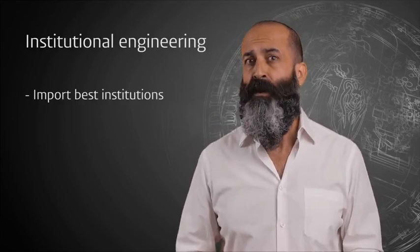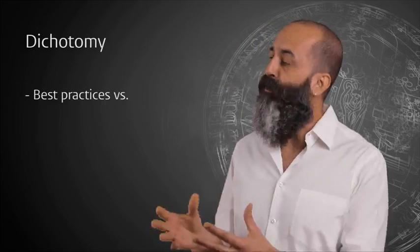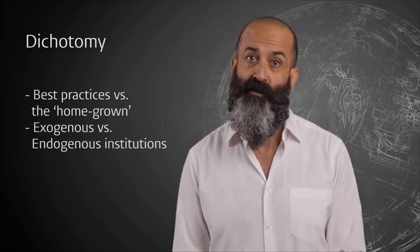If we could design the best institutions, import the best know-how and adopt the so-called best practices, we will get the results. And the local often gets forgotten in this formulation. And this brings us to a dichotomy between, let's say, the international best practices and the homegrown. This is what social scientists call the exogenous and endogenous institutions.